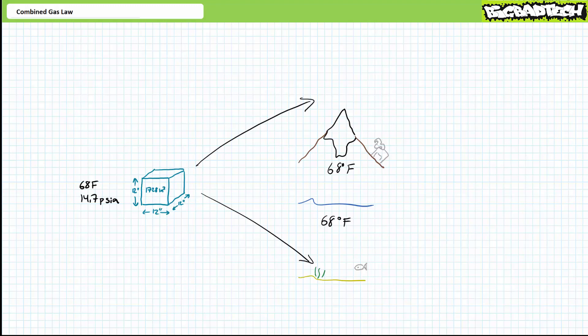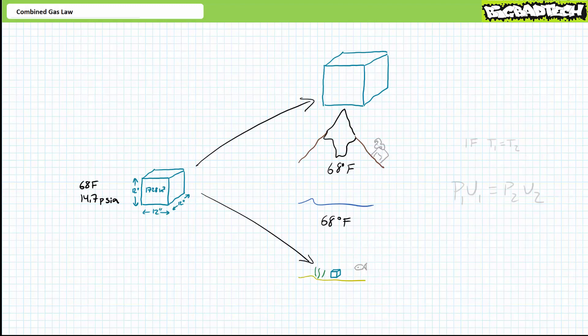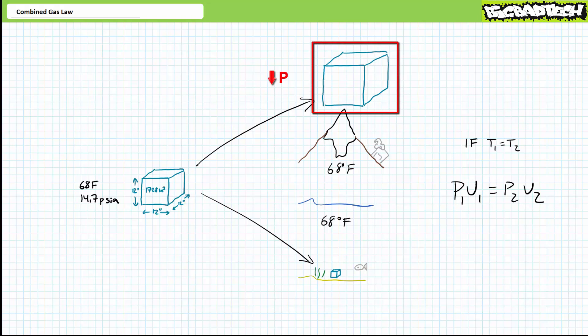At sea level, the standard cubic foot of air remains a cubic foot in volume because that's the conditions that define the standard cubic foot — i.e., 68 degrees Fahrenheit at sea level with a specified humidity. On top of the mountain, there exists less atmosphere, thus less pressure, and the same quantity of gas is free to expand — decrease the pressure and volume goes up. At the bottom of the ocean, with tons of water overhead, pressure substantially increases and the same quantity of gas is crushed into a smaller volume — increase the pressure and volume goes down. The thought experiment suggests that given constant temperature, volume is inversely proportionate to absolute pressure.